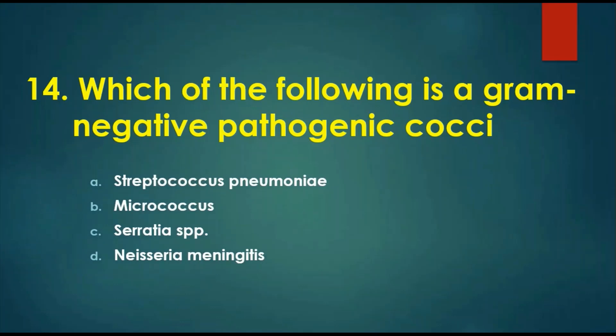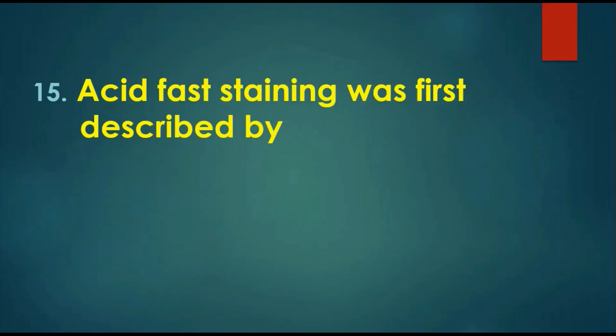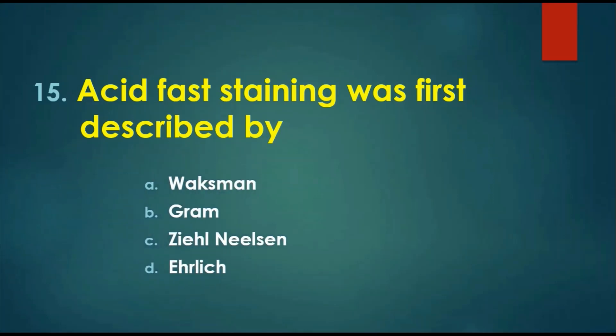Question 14: Which of the following is a gram-negative pathogenic cocci? Options are: A) Streptococcus pneumoniae, B) Micrococcus, C) Serratia species, D) Neisseria meningitidis. The first three are gram-positive. The answer is Neisseria meningitidis, a gram-negative pathogenic cocci.